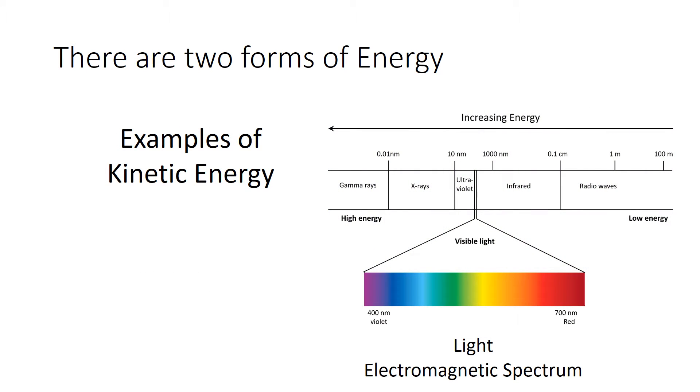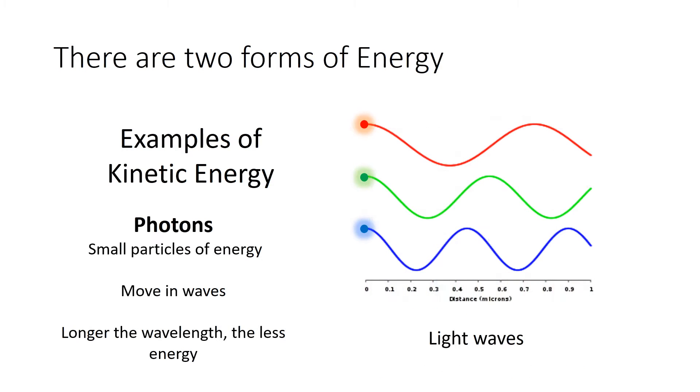Related to electricity is the electromagnetic spectrum, of which light is one very tiny part of the entire electromagnetic spectrum. So what exactly is light in the electromagnetic spectrum? The electromagnetic spectrum, that's basically photons, which are small particles of energy. They're not particles of mass, but these photons move in waves. And the wavelength is the distance between the two tops there.